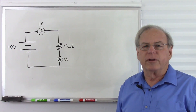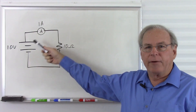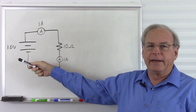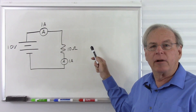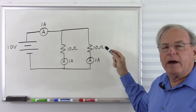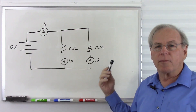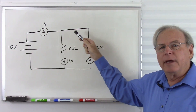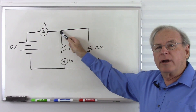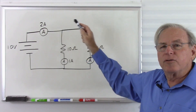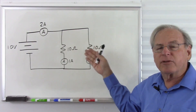What happens to our total resistance when we put resistors in parallel? Here I have a simple circuit with a 10 volt battery and a 10 ohm resistor. 10 ohms divided into 10 volts gives us one amp of current. What's going to happen if I put another 10 ohm resistor in parallel with this one? Now I have a path for 1 amp here and another path for another 1 amp here, so the current coming in must be 2 amps. My capacity to carry current went up, not down, so my resistance must have decreased.